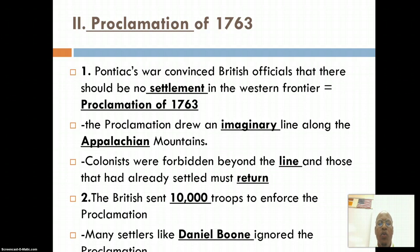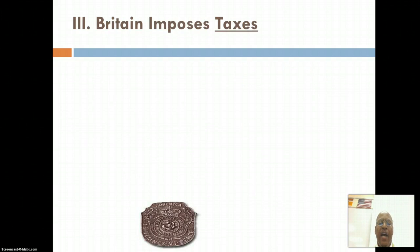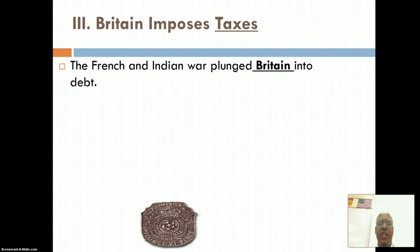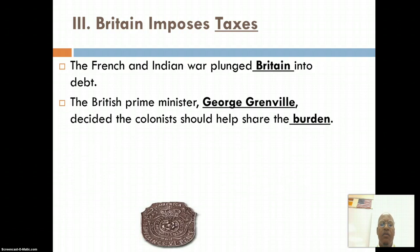Colonists such as Daniel Boone ignored the proclamation, and so the British were still fighting and battling with the Native Americans in the Ohio River Valley. As a result, the British felt that the colonists needed to help pay for the debt — first for the French and Indian War, but also for the expense being incurred for having to protect them beyond the Appalachian Mountains. Prime Minister George Grenville said that the burden should be placed more on the colonists as opposed to the British.